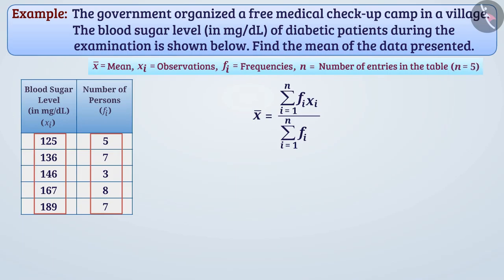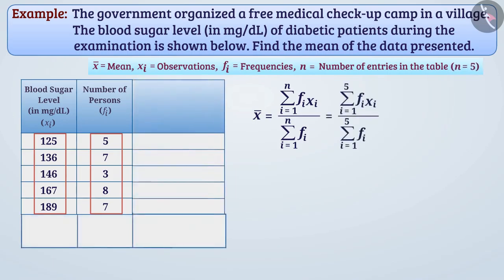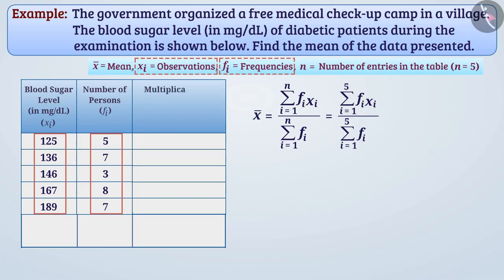Here n is equal to 5. Here we will make the table like this, where in the first column we will represent xi (observations), in the second column fi (frequency), and in the third column we will represent multiplication of observation and frequency, fi·xi.